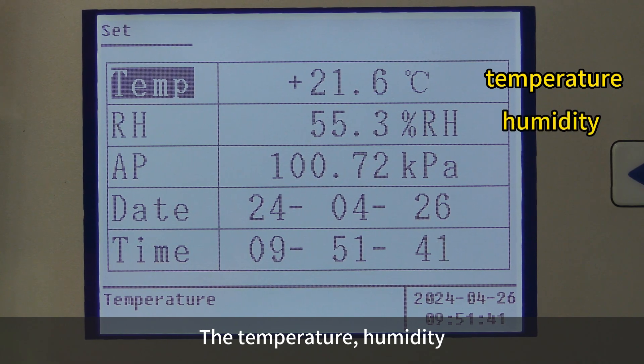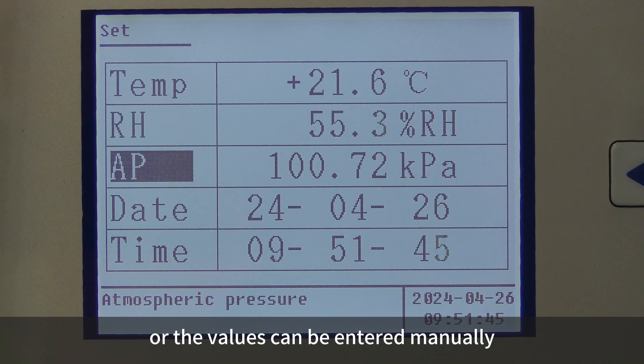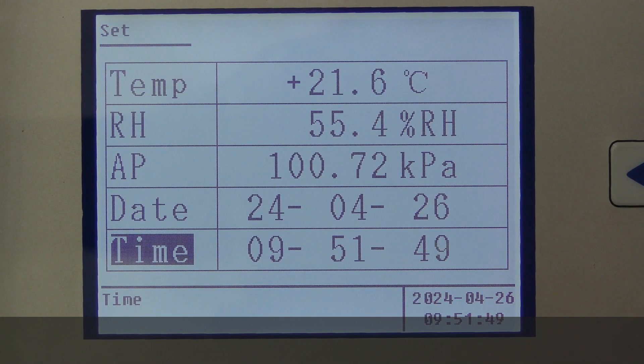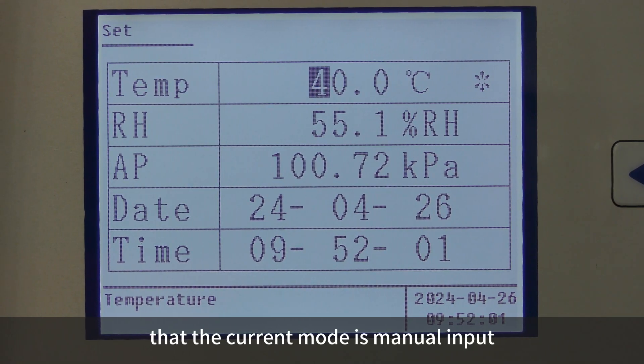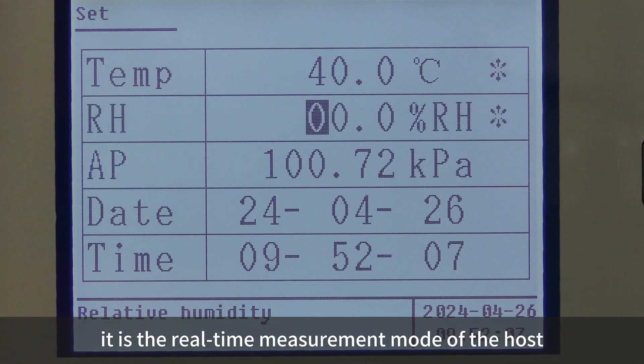The temperature, humidity, and atmospheric pressure of the sampler can be measured in real time, or the values can be entered manually. An asterisk after the value indicates that the current mode is manual input. Otherwise, it is the real-time measurement mode of the host.